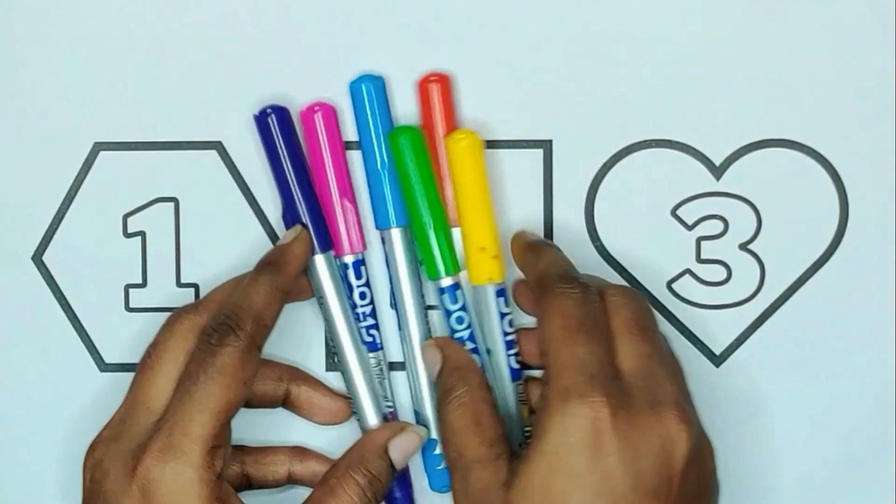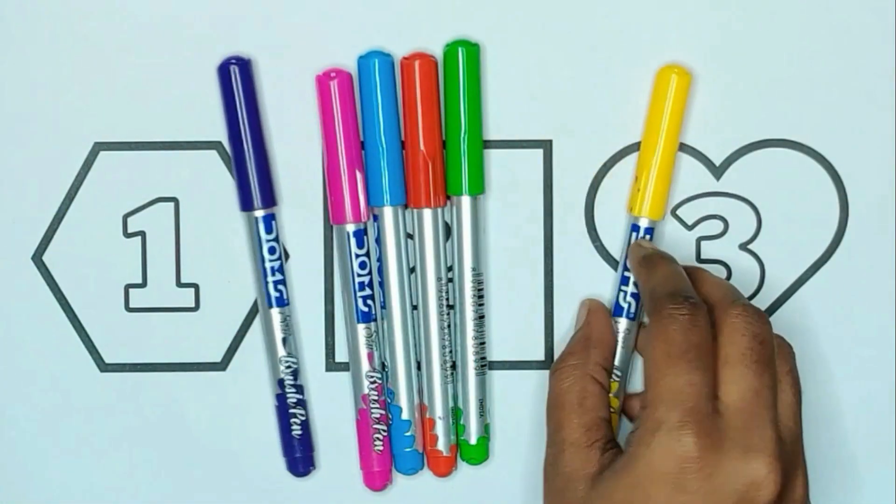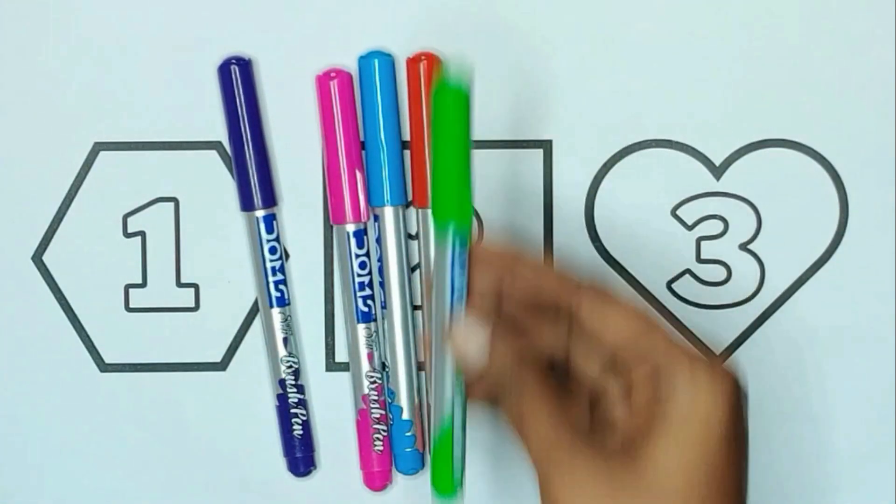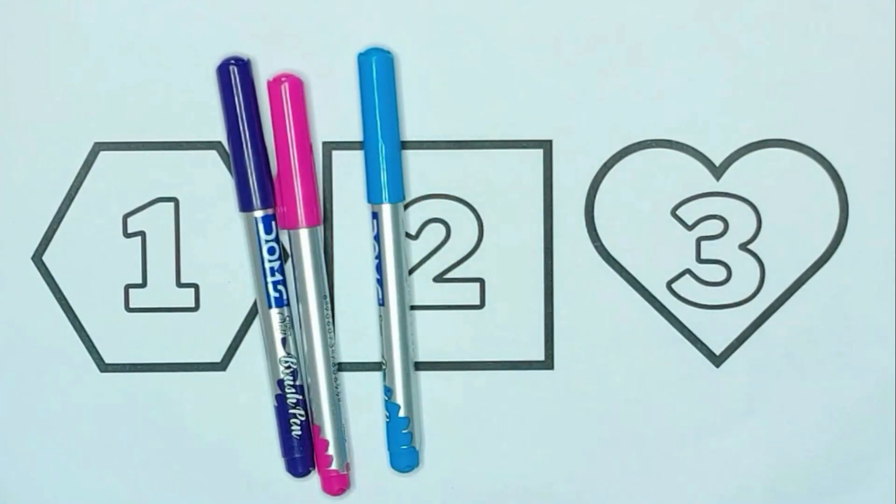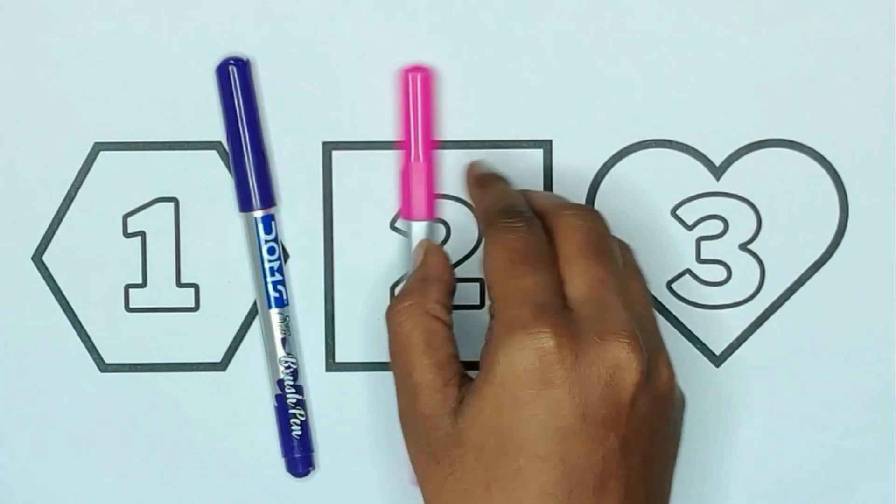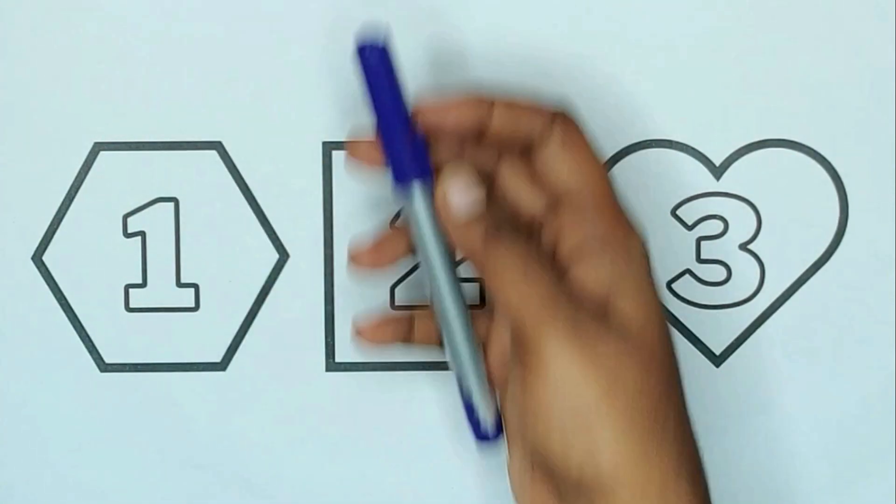Today we are learning shapes, numbers with colors. Yellow color, green color, red color, blue color, pink color and violet color.